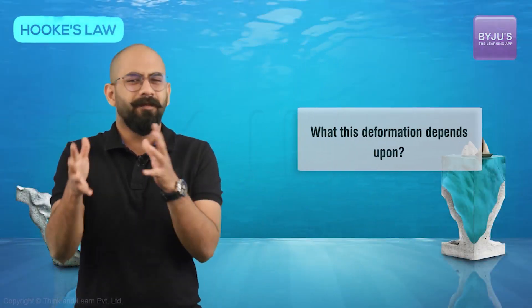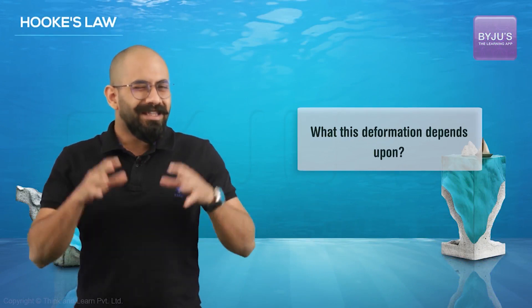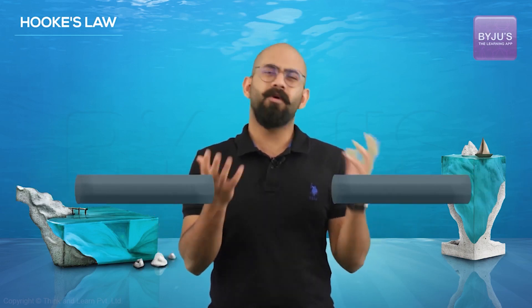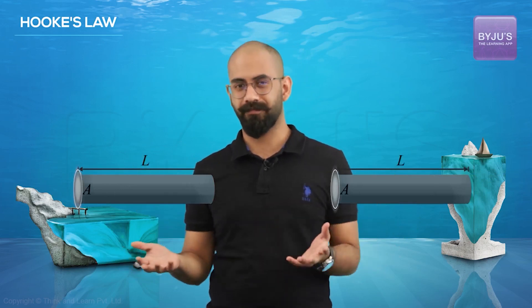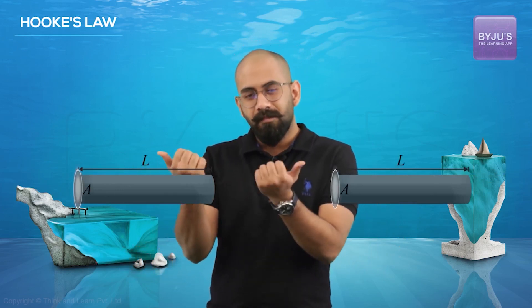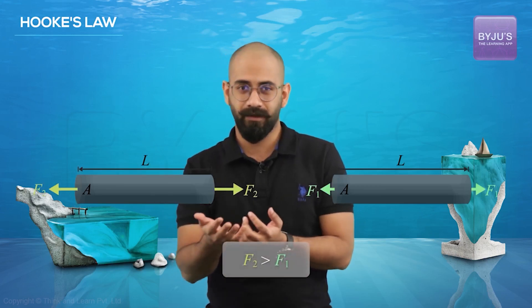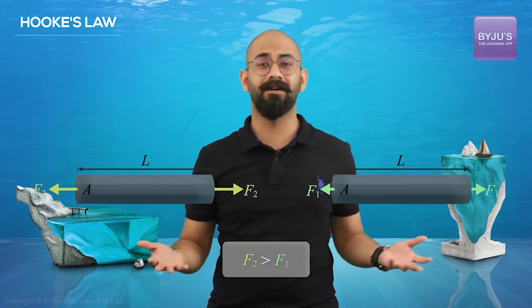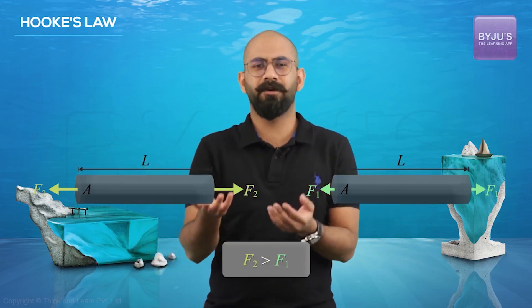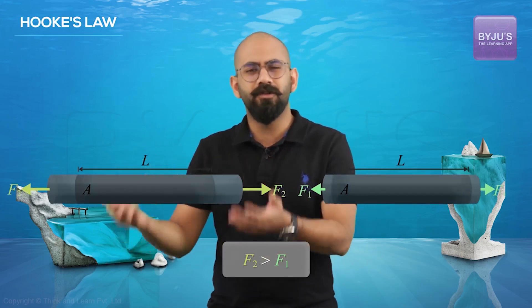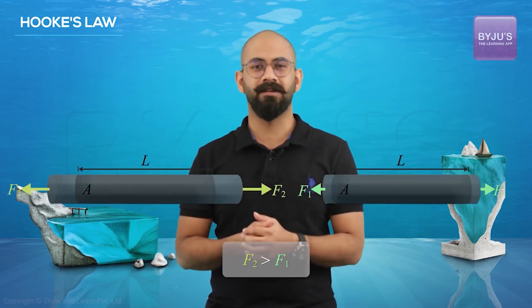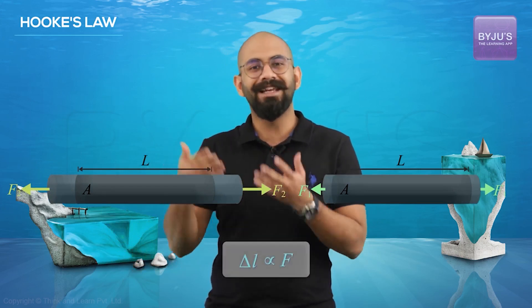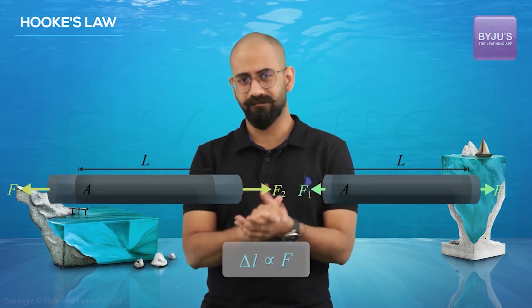Now let's see what this deformation — what this delta L — depends upon. For that, let's take different cases. Say I have two rods, both of the same length and same area of cross-section, but in one case the magnitude of the force I'm applying is greater. Which do you think will have a greater deformation? Obviously, greater force means greater deformation — so delta L increases if F increases.